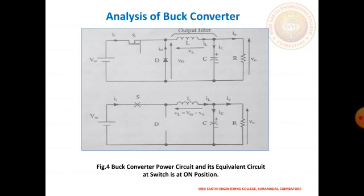When the transistor switch is open, the reverse voltage causes the diode to become forward biased. The stored energy in the inductor forces the current to continue flowing through the load in the same direction, returning through the diode. Inductor L1 returns its stored energy back to the load, acting as a source. At the same time, the capacitor also discharges, supplying current to the load. The combination of inductor L and capacitor C forms a filtering circuit. When the transistor is closed, current is supplied from the supply; when open, current is supplied by the inductor.